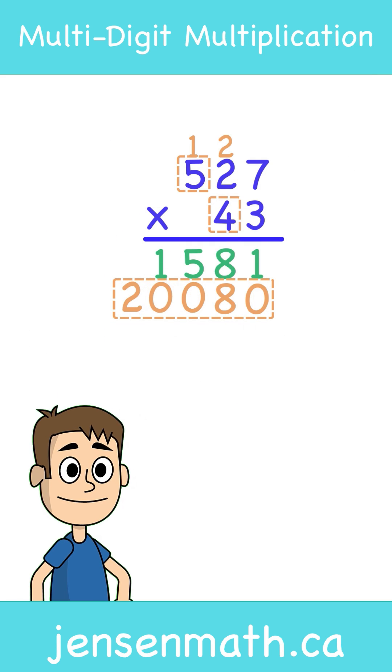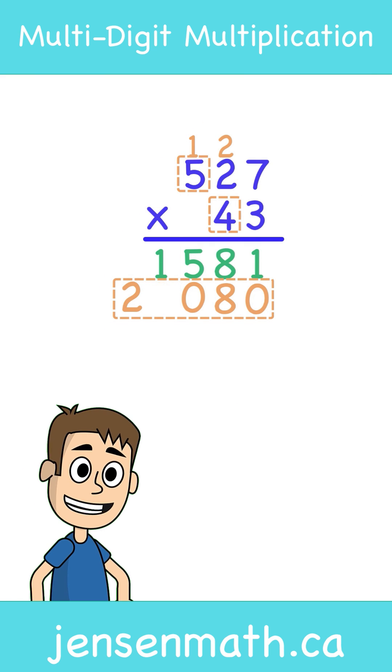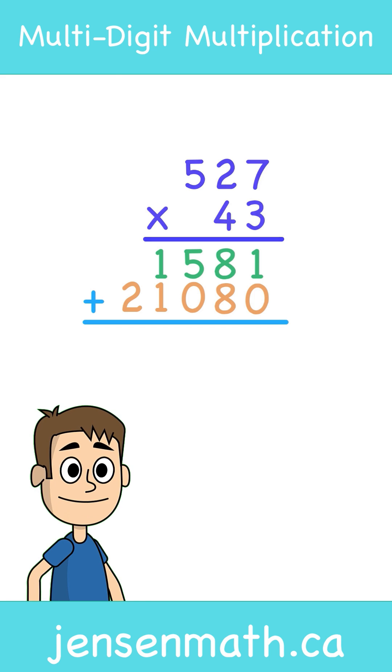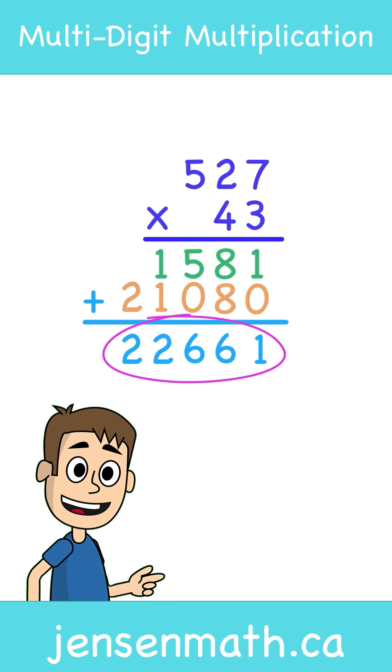4 times 5 is 20. Plus the 1 we carried is 21. Now all that is left to do is adding our 2 products together. That gives us a final answer of 22,661.